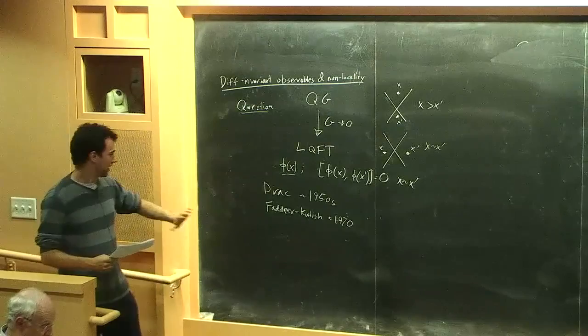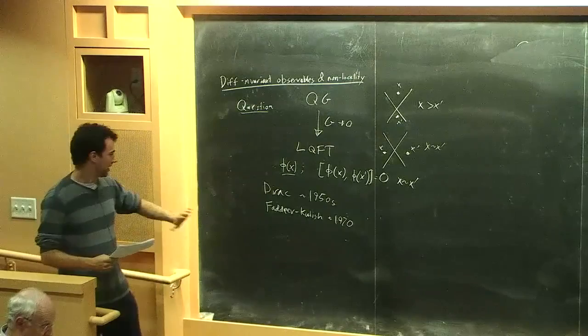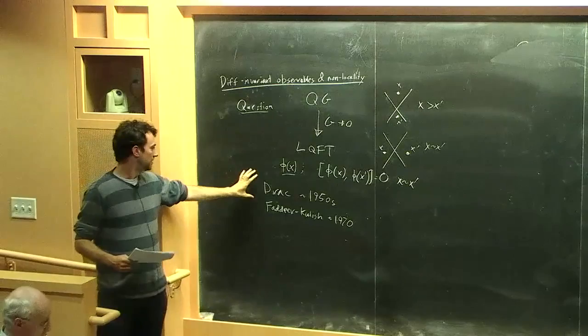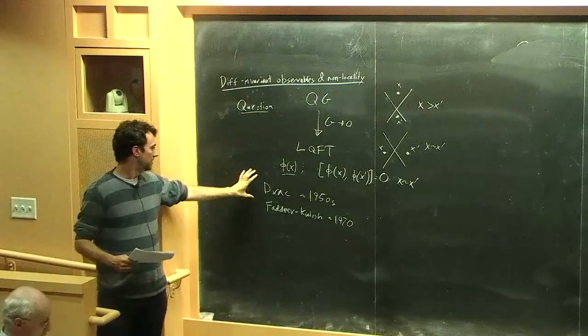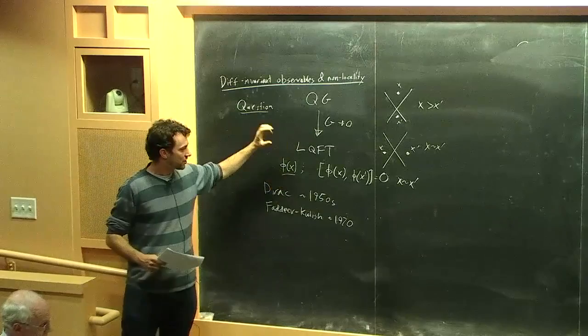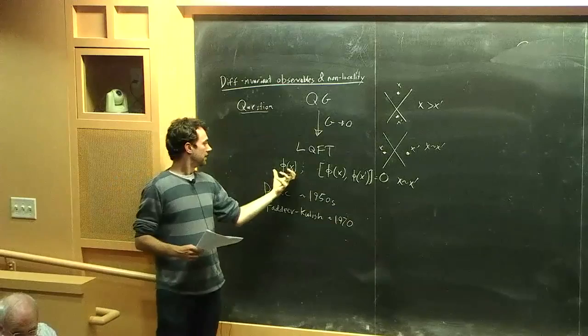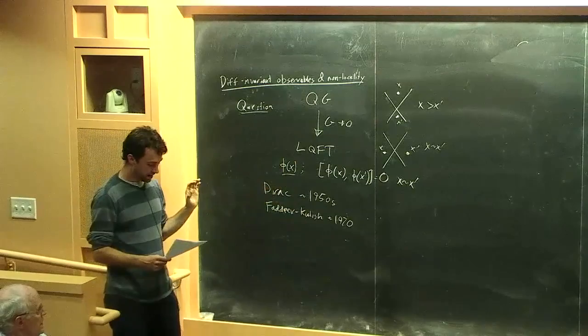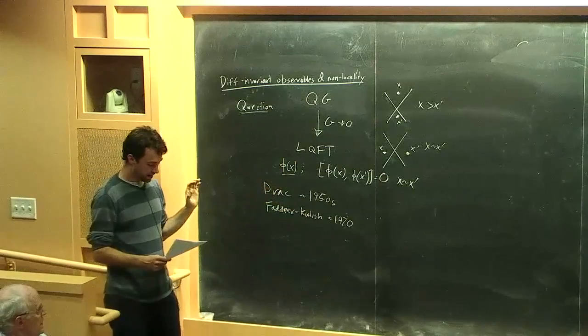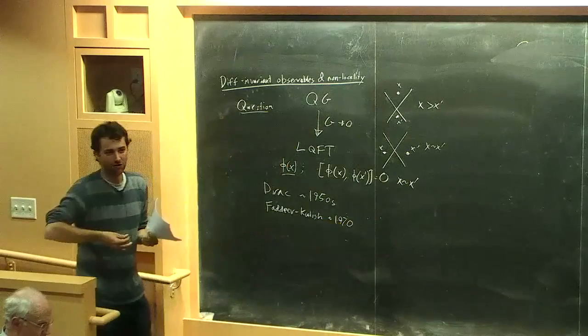This also connects to the story of infrared divergences. There's work by Faddeev and Kulish where they pointed out that the interaction in QED doesn't shut off asymptotically. So for a charged scalar field, the asymptotic states are not just modes of this field. They showed how to construct new asymptotic states, which are essentially charged fields dressed with some coherent state of A. The question is whether there are local operators of which those things would be the modes.